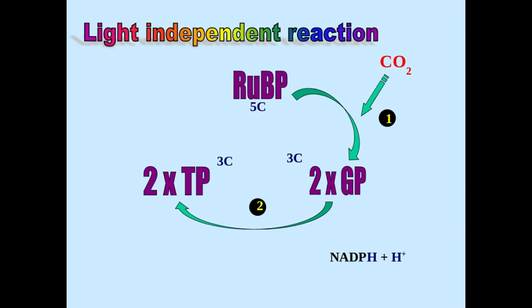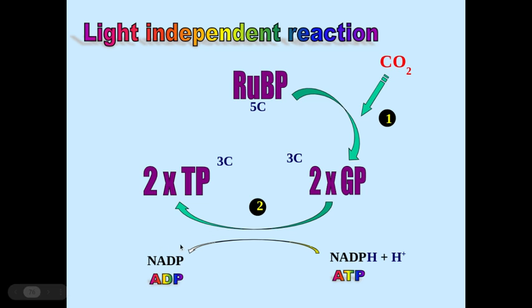GP is then converted into TP using the hydrogen ion and electron from NADPH, which has come from the light dependent reaction. The electron and hydrogen are moved onto GP, so GP is being reduced. GP is also going to be phosphorylated because it gains an inorganic phosphate from ATP, giving us ADP. The ADP can go back to the light dependent stage to pick up another hydrogen ion and electron, and can be phosphorylated back into ATP using ATP synthase from the light dependent stage.